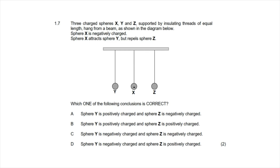Question 1.7: Three charged spheres X, Y, and Z are supported by insulating threads hanging from a beam. Sphere X is negatively charged; it attracts Y but repels Z. Since X and Y attract, they must have opposite charges, so Y is positively charged. Since X repels Z, they share the same charge, making Z negatively charged. The correct answer is option A: sphere Y is positively charged and sphere Z is negatively charged.